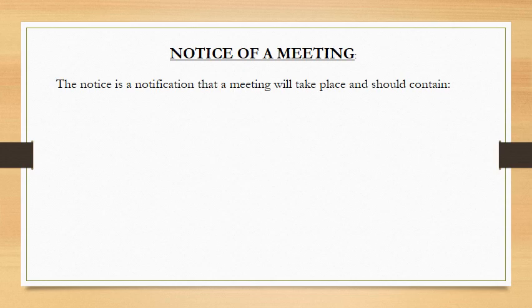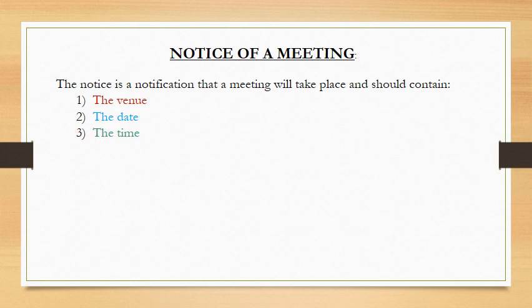The notice is a notification — it is a letter that tells you that a meeting will take place. It will contain the following information: the venue, that is where the meeting will take place; the date, on which day the meeting will take place; the time, the exact time the meeting will take place; as well as the type of meeting — whether it is a general meeting, a special meeting, or whatever. You indicate that in your notice.